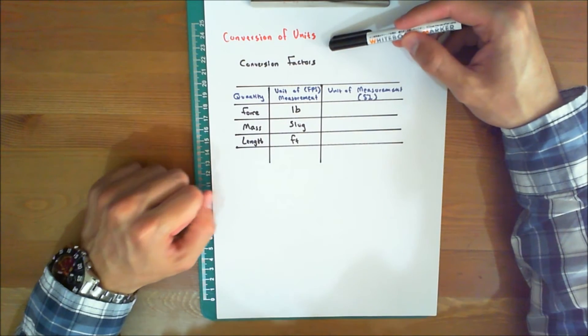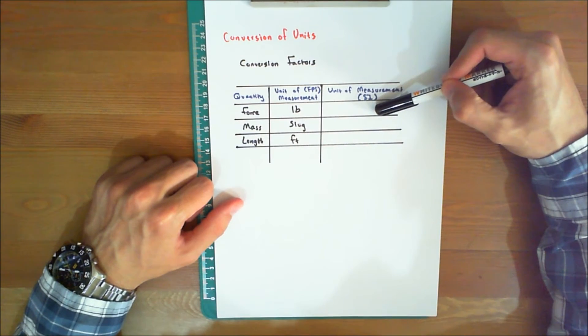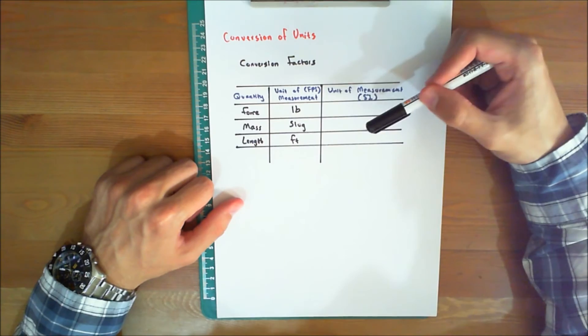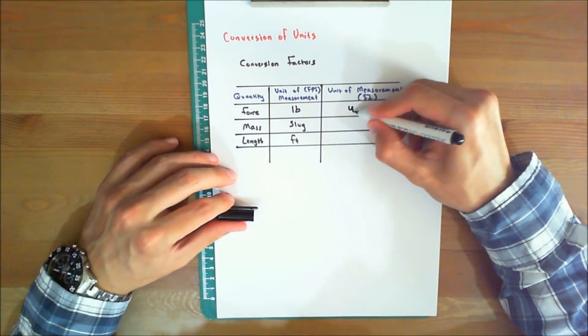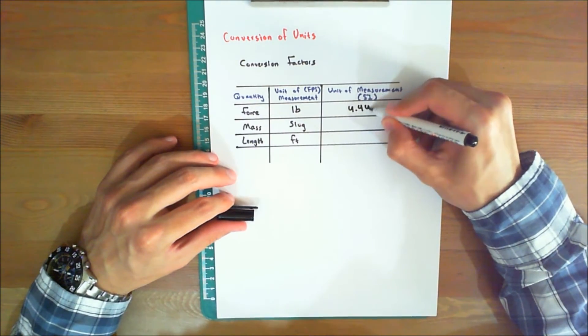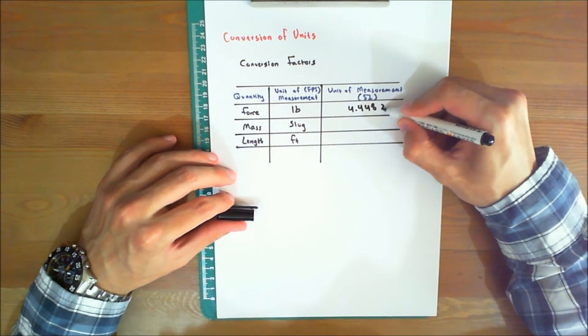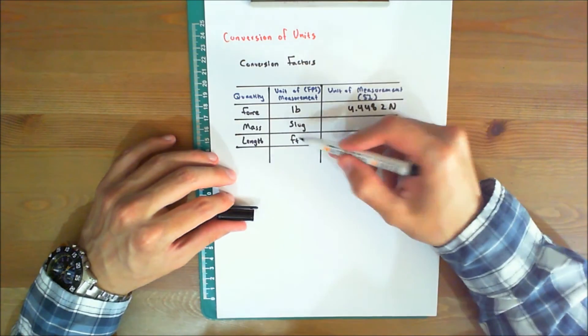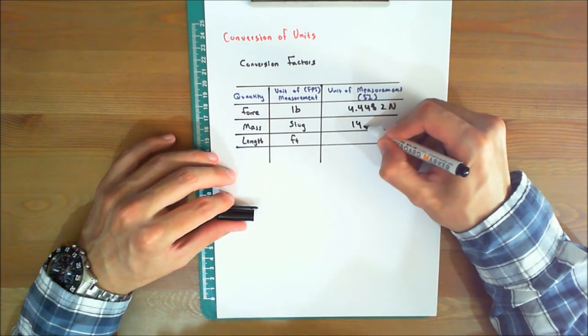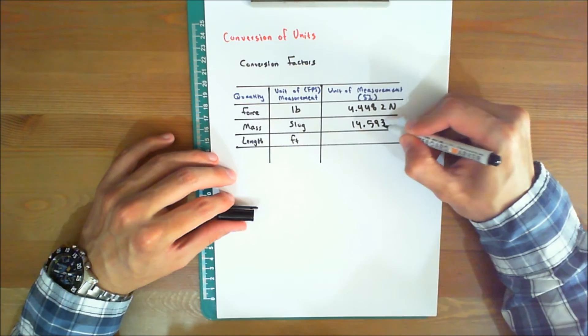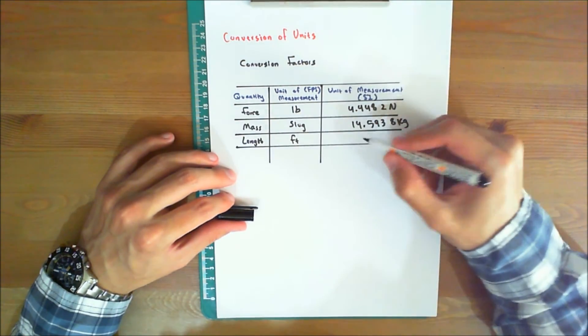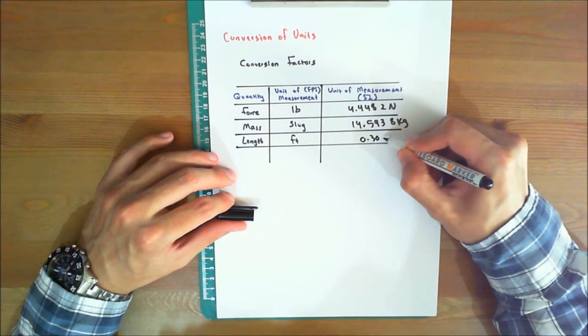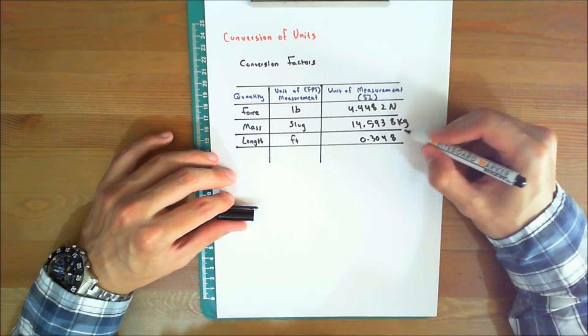Now, let's discuss conversion units. This table over here provides a set of direct conversion factors between FPS and SI units for the basic quantities. So, one pound equals 4.4482 newtons, one slug equals 14.5938 kilograms, and one foot equals 0.3048 meters.